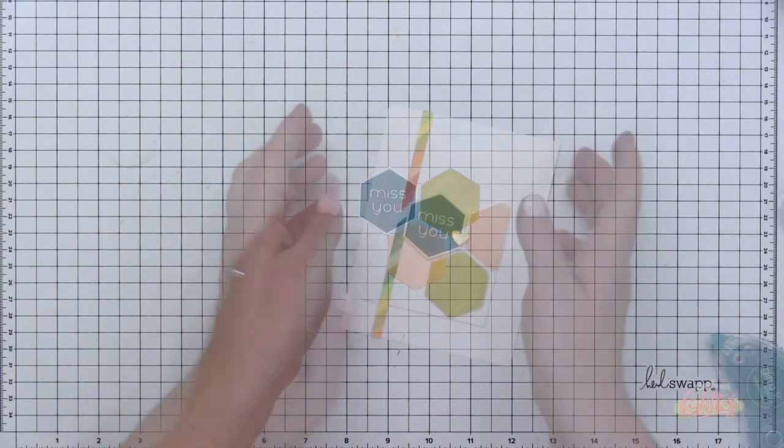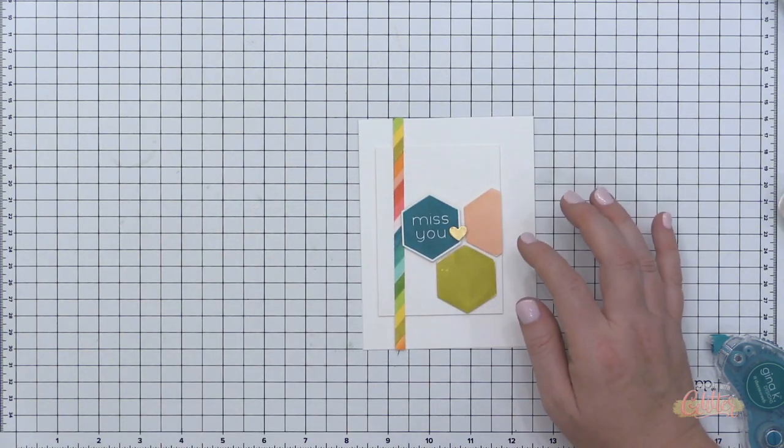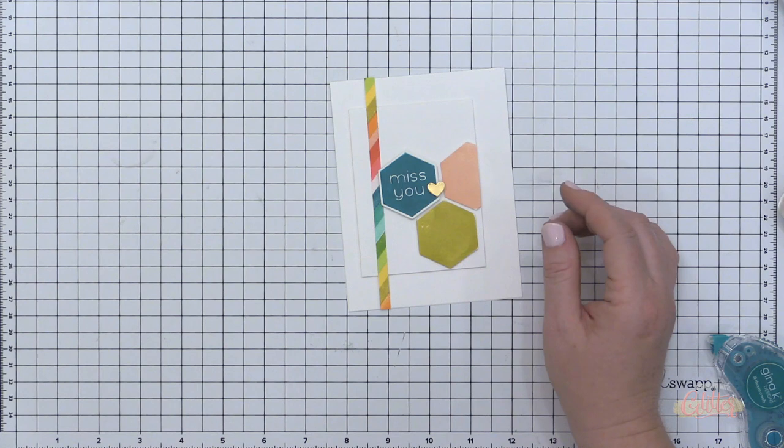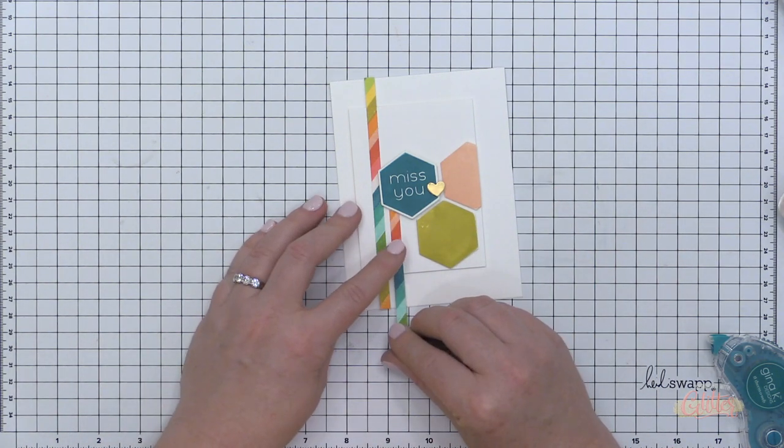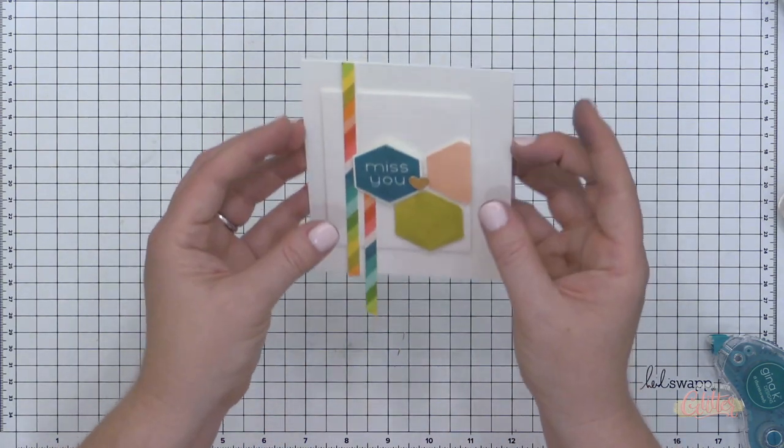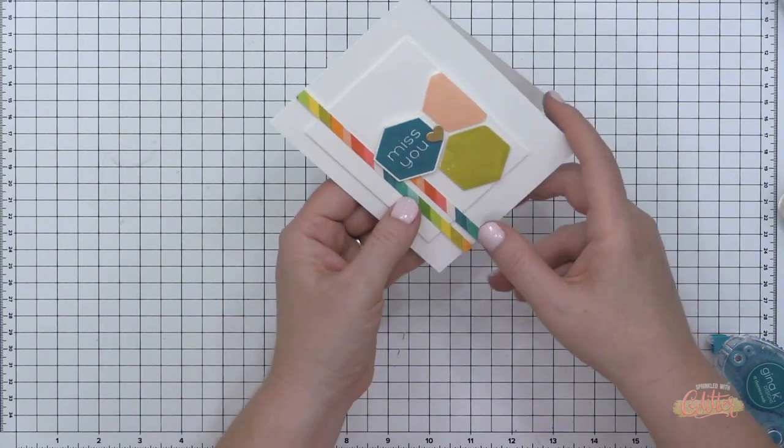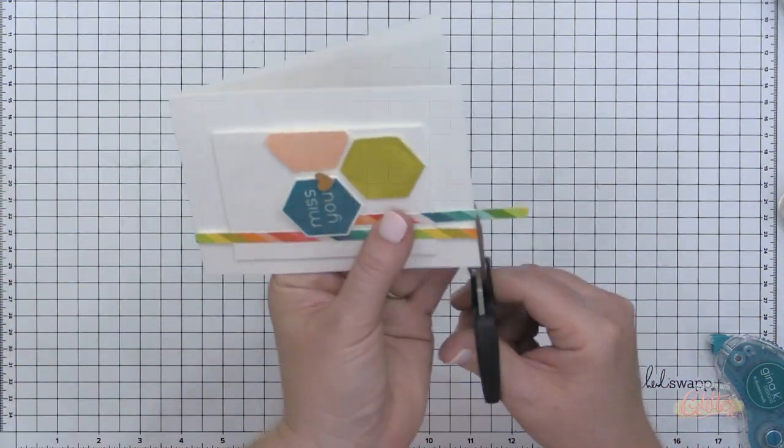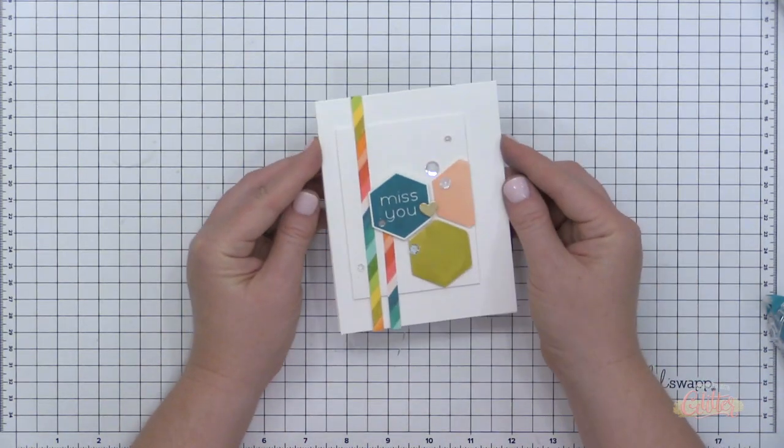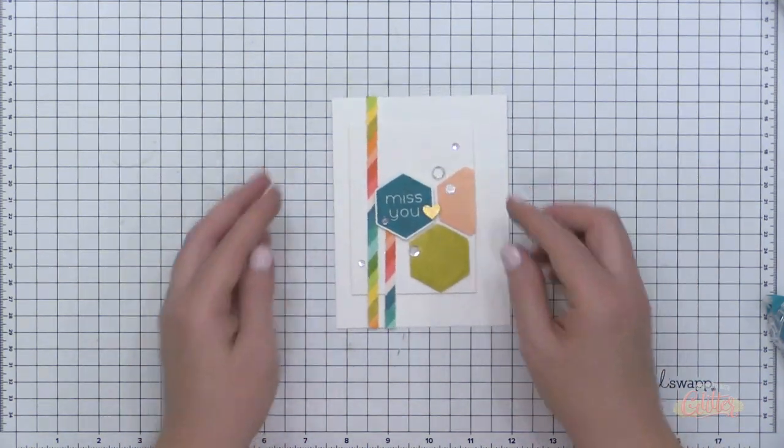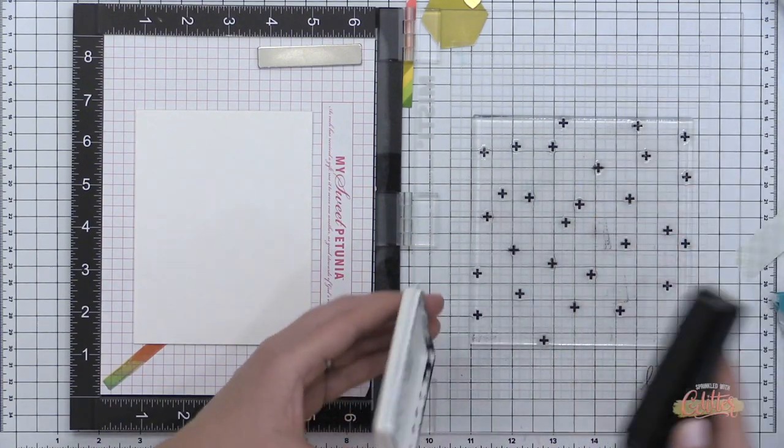I'm going to die cut them using the coordinating dies, and then I just arranged them onto my card front with a strip of that rainbow pattern paper that I created. I added a second little strip here. It's kind of hard to see right here, but it is popped up in the center. There's a smaller three by four piece of white cardstock there in the center that those hexagons are arranged on. I finished it off with some sparkling clear sequins and a little gold heart. Super simple, this card is done.